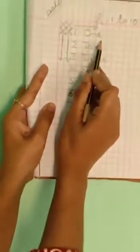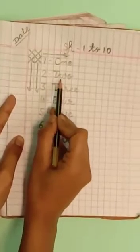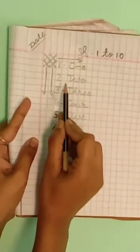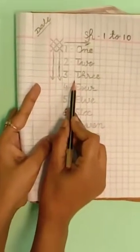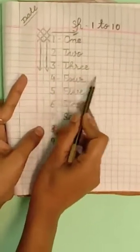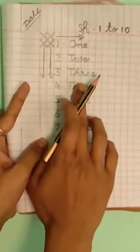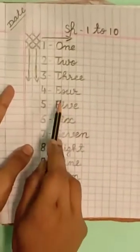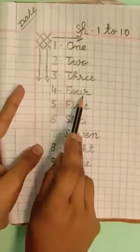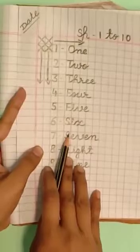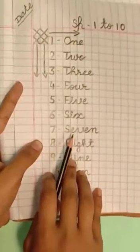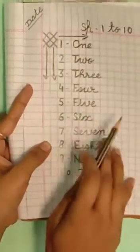O-N-E 1, 2 T-W-O 2, 3 T-H-R-E-E 3, 4 F-O-U-R 4, Now 5 F-I-V-E 5.